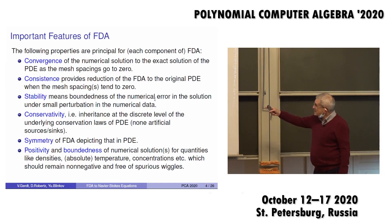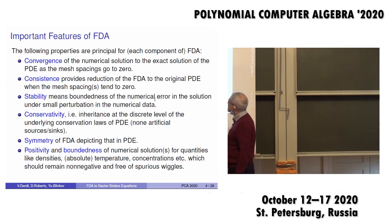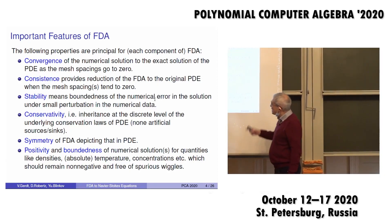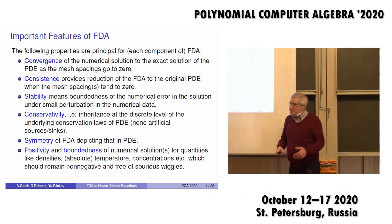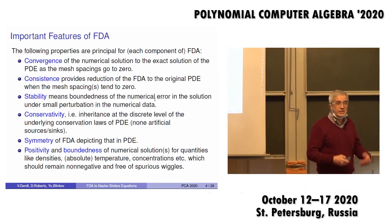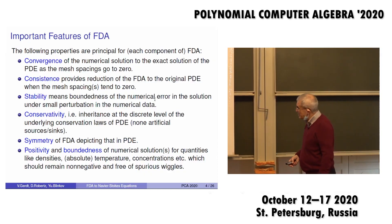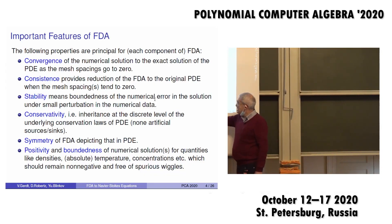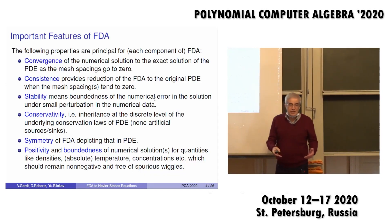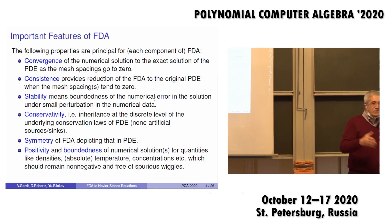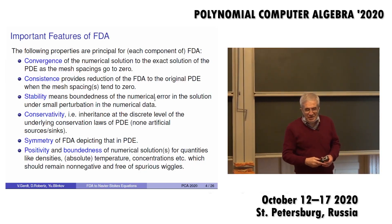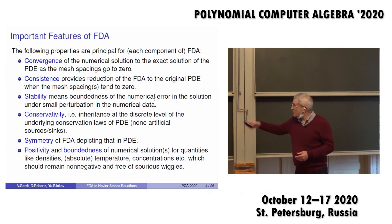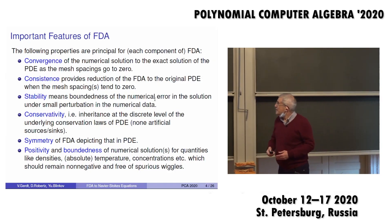There are six basic requirements for discretizations: convergence, consistency, stability, conservativity, symmetry, and positivity/boundedness. Conservativity is very important — a scheme should inherit discrete conservation laws and symmetries. Positivity is also very important because quantities like density or absolute temperature must be positive. If you solve numerically, sometimes the numerical value may become negative, which is unacceptable from a physical point of view. You may also get spurious oscillations.